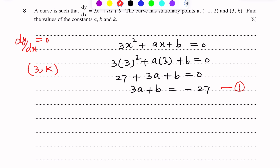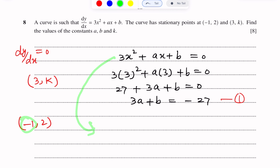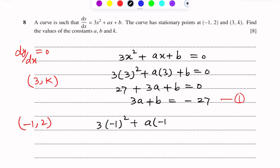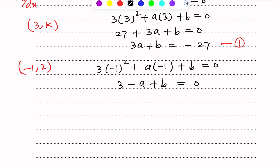Similarly, we put the second stationary point x = -1. We get 3(-1)² + a(-1) + b = 0. Simplifying, 3 - a + b = 0, so b - a = -3. Let this be equation 2.